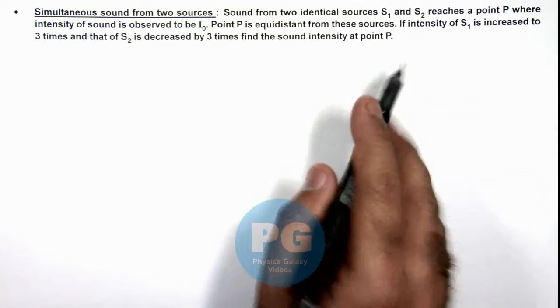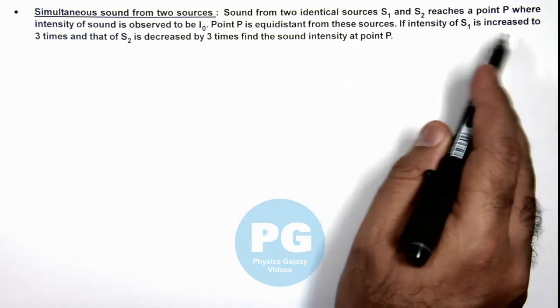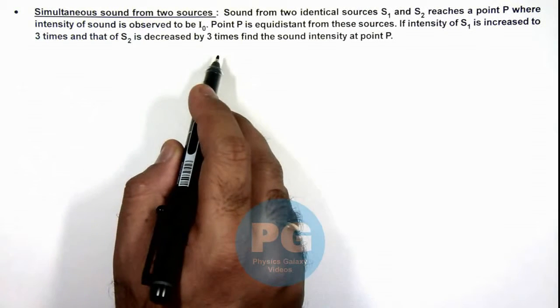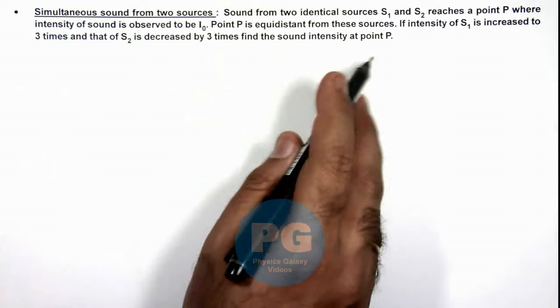If intensity of S₁ is increased to 3 times and that of S₂ is decreased by 3 times, we are required to find the sound intensity at point P.